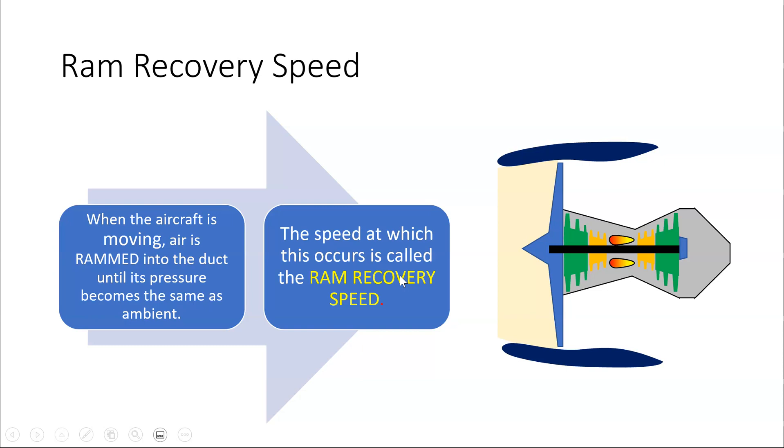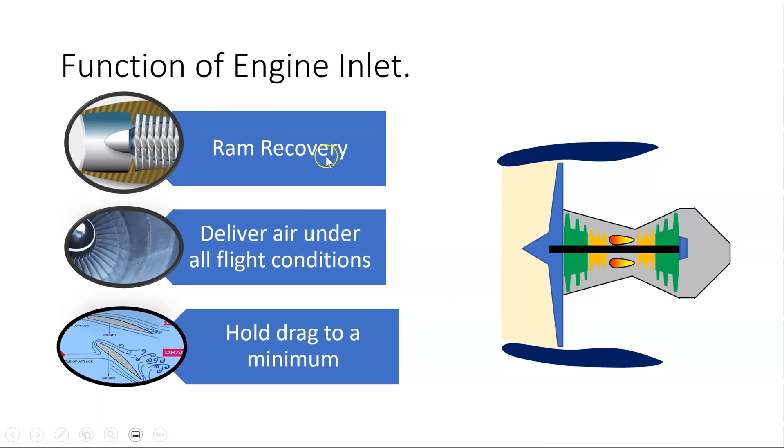Now there is a speed called the ram recovery speed. As the air comes in, it comes into the engine inlet and it hits the fan, and it begins to stagnate here at the fan, just as it hits the fan. And so as the air hits the fan, it slows down, and so its pressure increases. And when the pressure here is exactly the same as the pressure in the ambient air, then we've said we've reached the ram recovery speed.